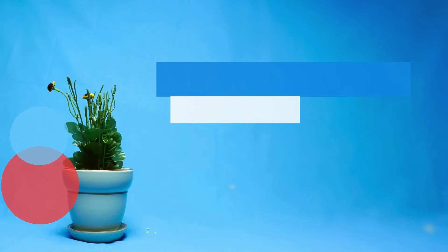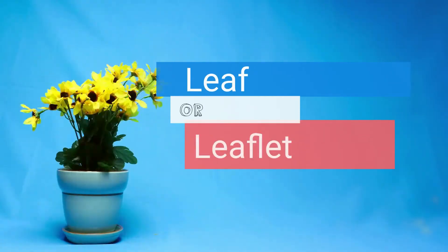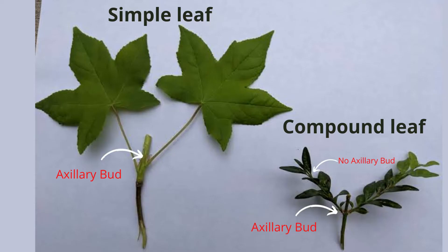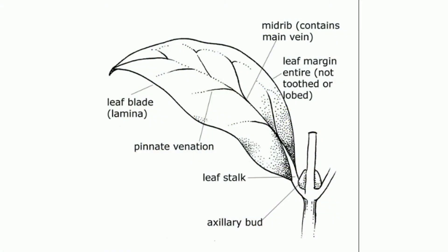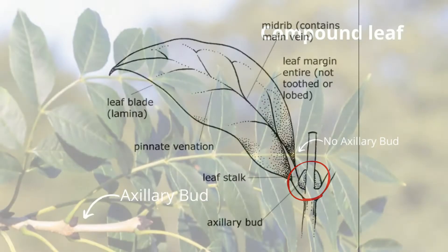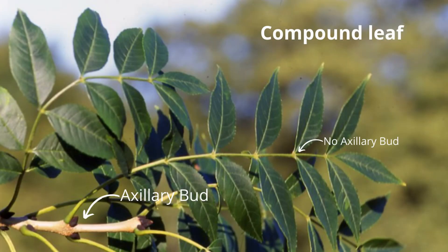It is sometimes confusing to know whether you are looking at a leaf or a leaflet. All leaves, whether simple or compound, will have a bud node or an auxiliary bud at the place of the petiole. A simple leaf will have an auxiliary bud at the petiole of the simple leaf. Compound leaves have a bud node at the base of each stem or petiole, but no bud node at the base of each leaflet.